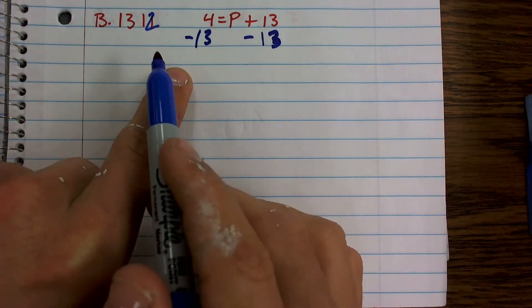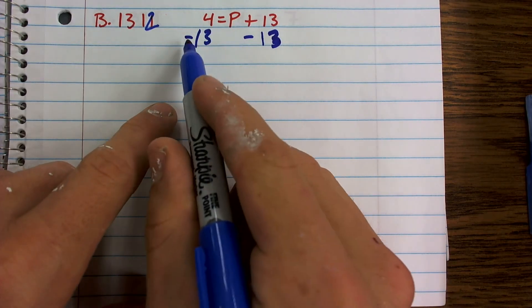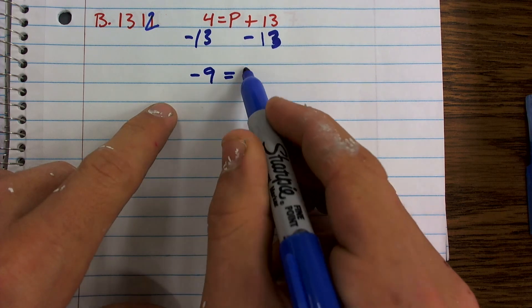Now, since I've subtracted 13 on both sides, I know that I'm going to have equivalent equations. So therefore, 4 minus 13 is negative 9 equals p.